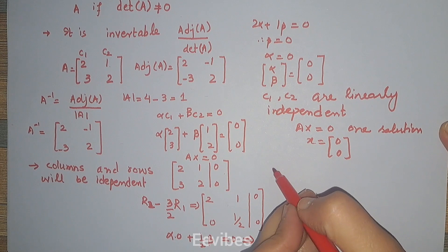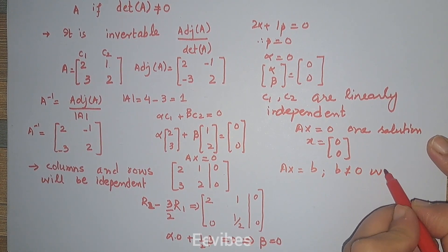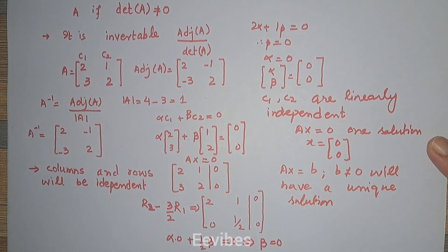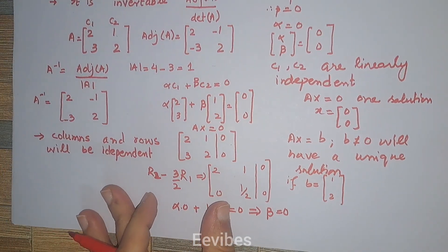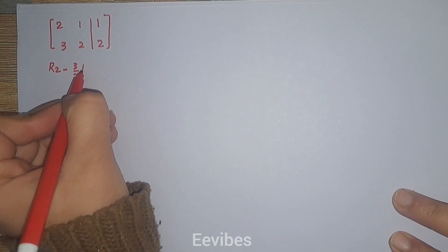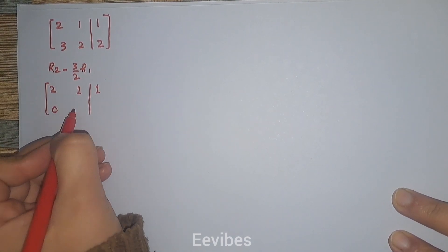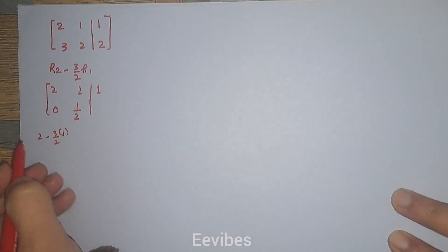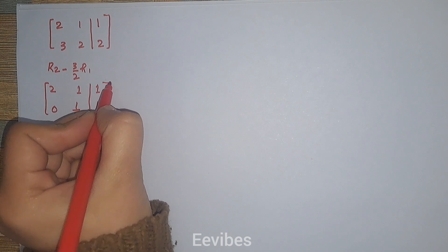The next property is that Ax = b, where b is not equal to zero, will always have a unique solution. Assuming b = [1, 2], let's write down this system and apply Gauss elimination: R2 minus (3/2) times R1. The first row remains unaffected, while in the second row the first entry becomes 0, the second entry becomes 1/2, and performing R2: 2 − (3/2)·1 gives 1/2 for the right-hand side as well.